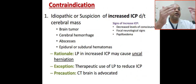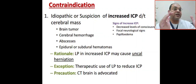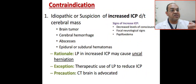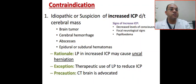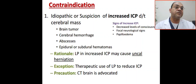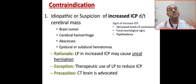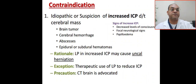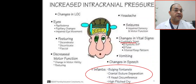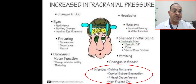If the anterior fontanelle is closed and there is increased intracranial tension, performing a lumbar puncture may cause brain herniation or tonsillar herniation. Unless LP is being done as a therapeutic intervention to reduce intracranial pressure, a CT brain scan is advocated first when increased intracranial pressure is suspected.